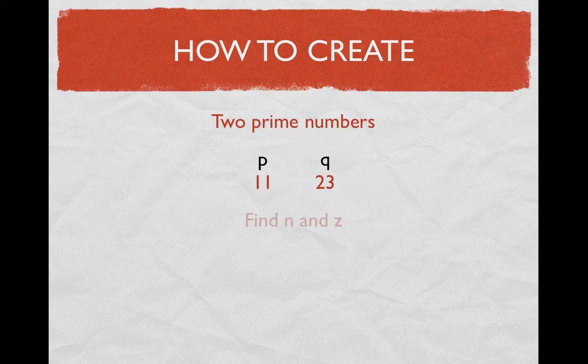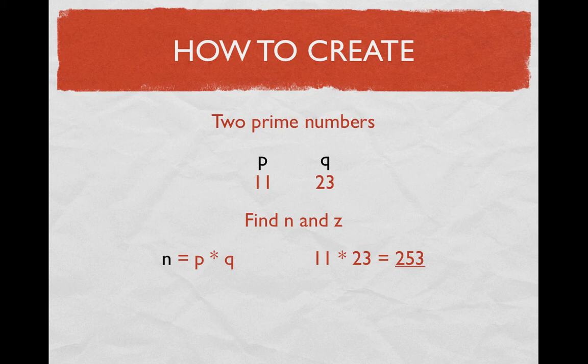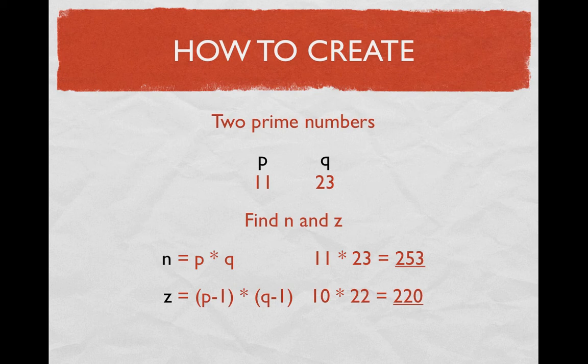The next step is to find N and Z. N is, by definition, P times Q, which would be 11 times 23, which equals 253 — so N equals 253. Z, on the other hand, by definition, is P minus 1 times Q minus 1, which would be 10 times 22. That equals 220 — so Z equals 220.